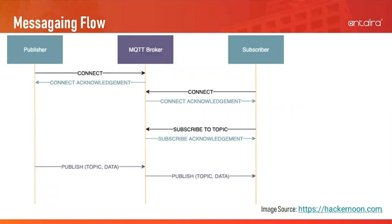Before the publisher publishes a message to an MQTT topic, the publisher initiates a connection by sending a connect message to the MQTT broker. The MQTT broker responds with a connect acknowledgement message. Once the connection is established, the publisher can publish a message to an MQTT topic. The MQTT broker keeps the connection open until the publisher sends a disconnect message. The same principle applies to the subscriber — a connection must be established before the subscriber can subscribe to a topic from the MQTT broker. The publisher and the subscriber don't need to know the presence of each other because they only need to communicate with the MQTT broker.